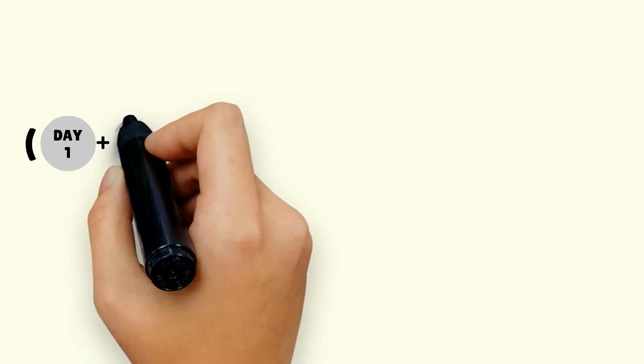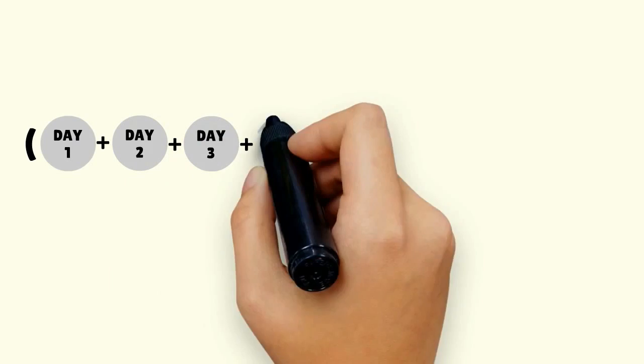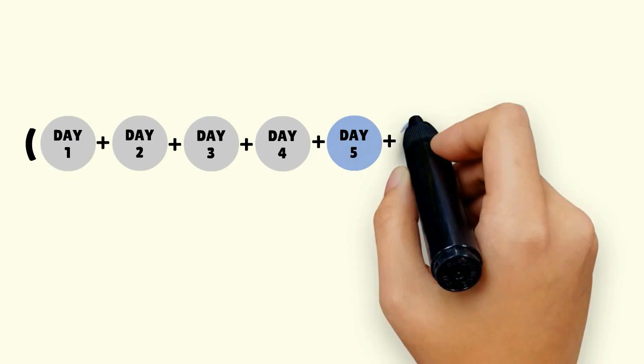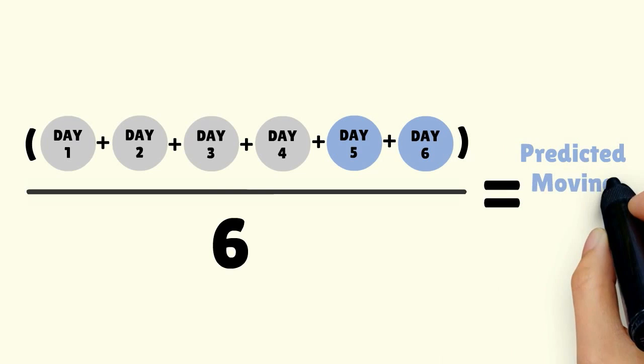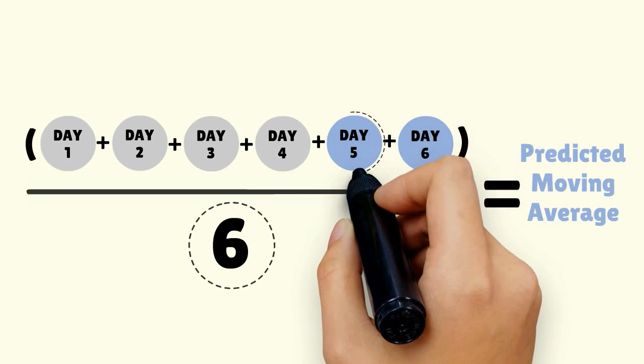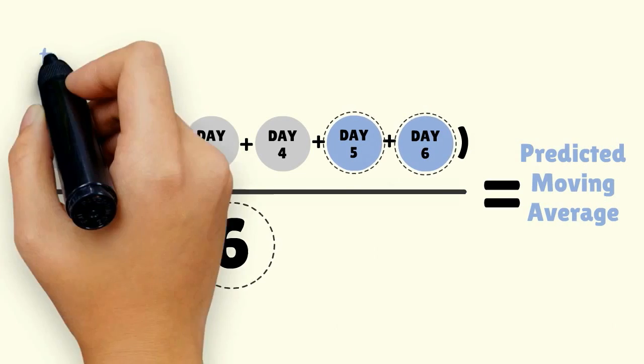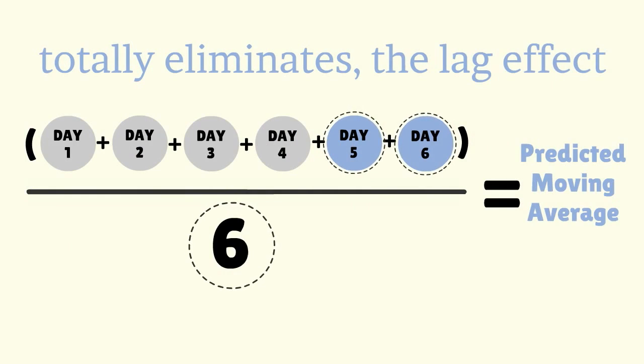A 6-day PMA of closing prices takes the past 4 days of closes, adds 2 days of predicted data, and then divides that total by 6. Six days are still averaged, but day 5 and day 6 are predicted. This minimizes, if not totally eliminates, the lag effect.